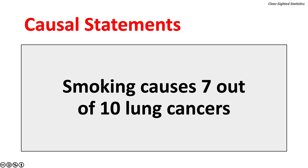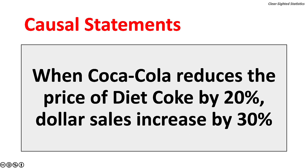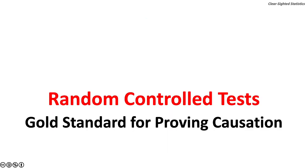Three examples of causal statements: smoking causes 7 out of 10 lung cancers; switching to an insulin pump will contribute to reducing Type 1 diabetics' A1C scores to below 7%; when Coca-Cola reduces the price of Diet Coke by 20%, dollar sales increase by 30%. Proving causation is very complicated. Causation is established using randomized control tests and large observational studies, with randomized control tests being the gold standard.